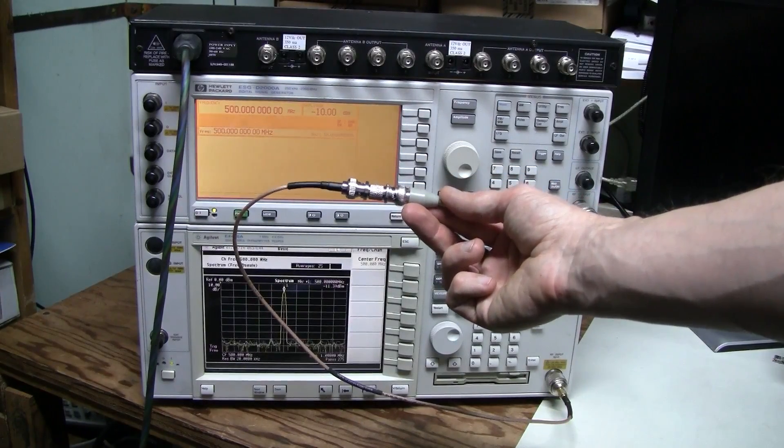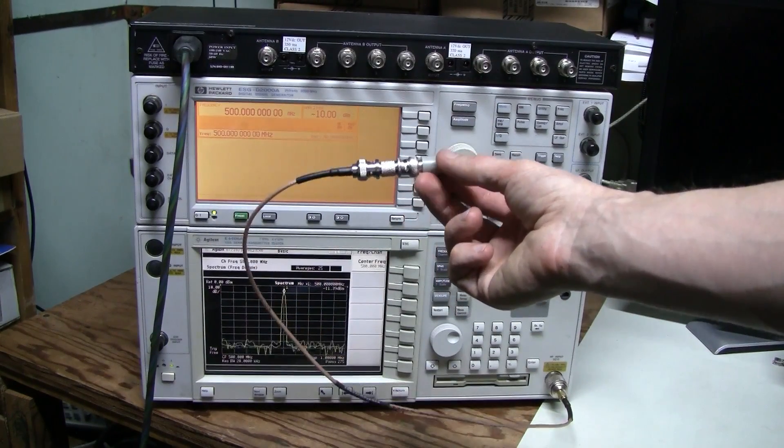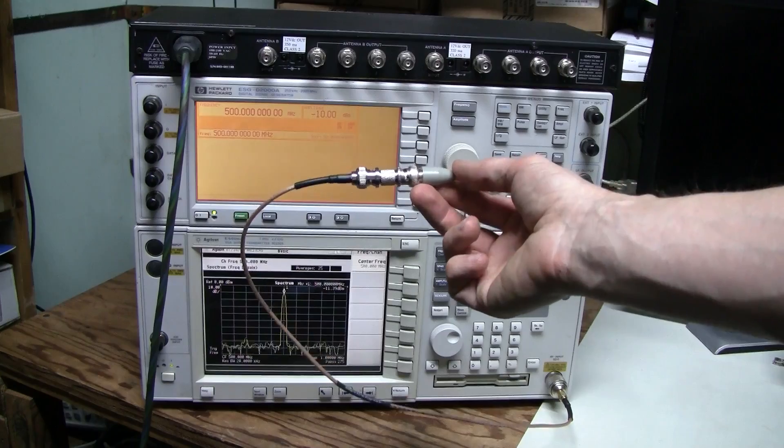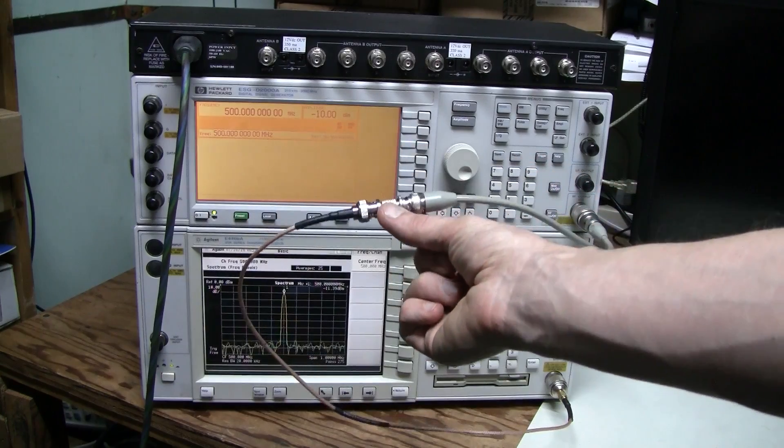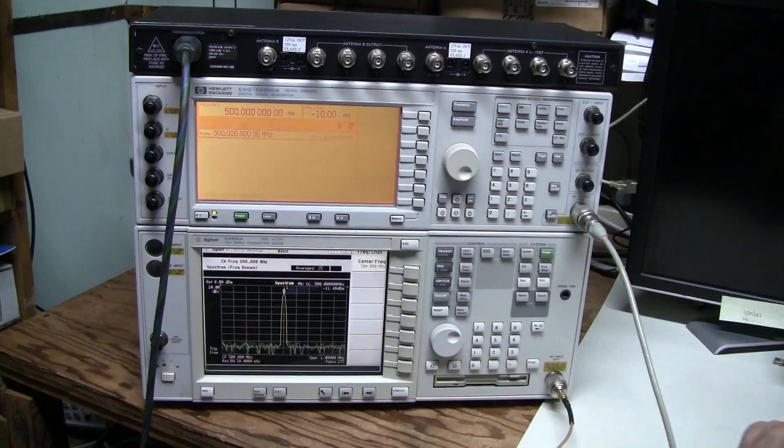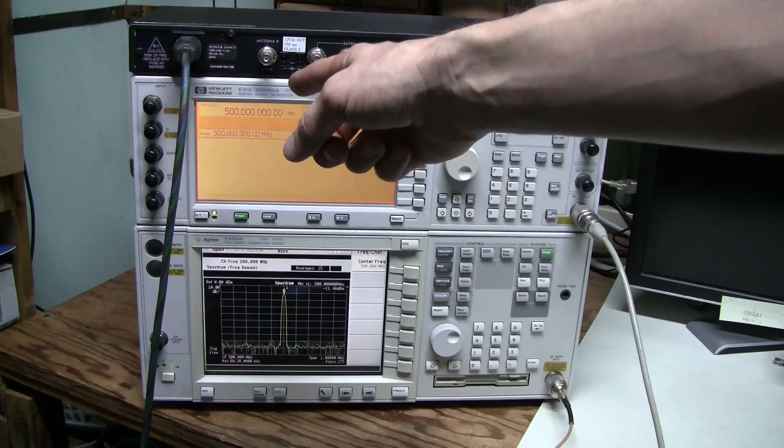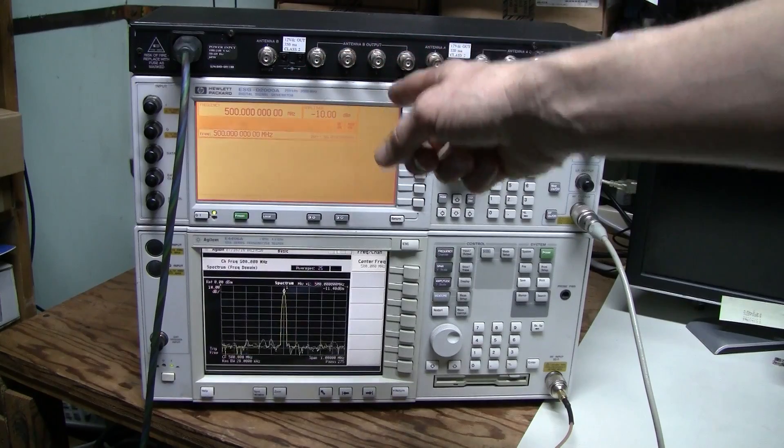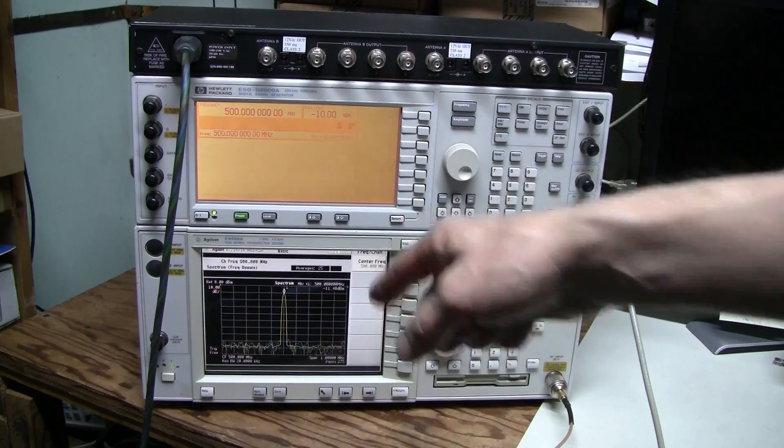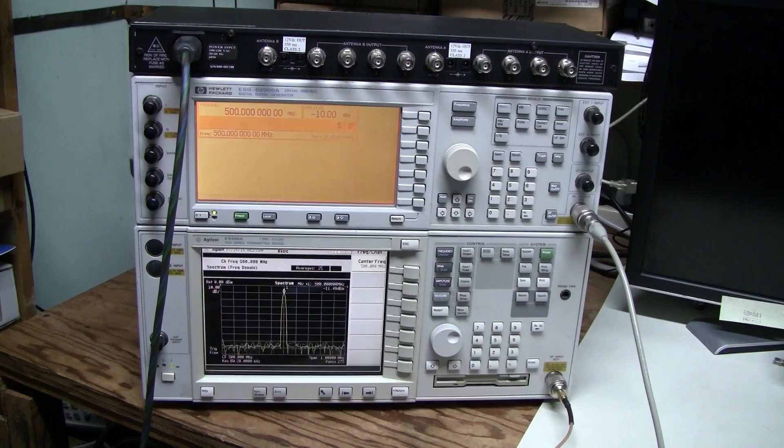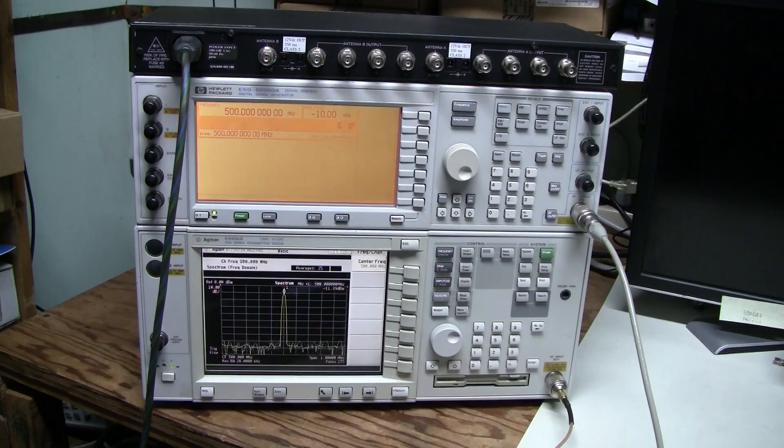And here is the cable loss measurement. The same cables and connectors this time connected through this BNC coupler and we have 500 megahertz minus 10 dBm in minus 11.4 out so about 1.4 dB of loss in these cables and connectors.